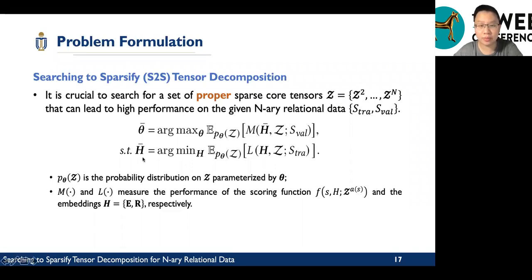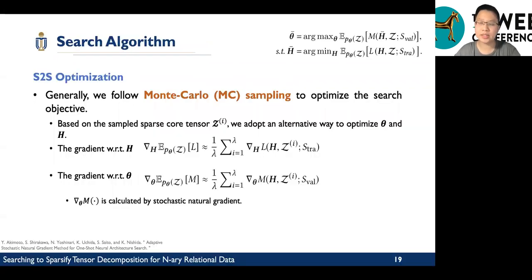Such proper sparse core tensors that can lead to high performance. And we formalize this problem into a bi-level optimization problem. Generally, we take z, the sparse core tensors, as a random variable, and we utilize a probability distribution on this random variable parameterized by theta. What we try to do is we want to achieve a probability distribution that can output the sparse core tensors with high performance and its corresponding embeddings. We name it as Search to Specify Tensor Decomposition, also S2S. How do we optimize this problem? Generally, we follow MC sampling to optimize the search objective. Based on a sampled core sparse core tensor, we adopt an alternative way to optimize theta and H. And note that we compute the gradient regarding theta with the stochastic natural gradient.